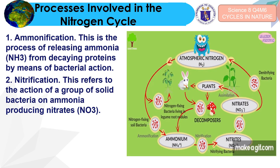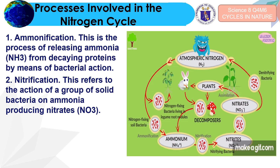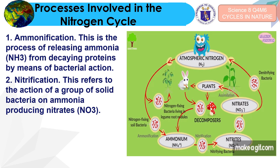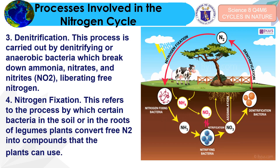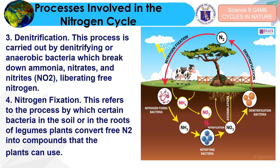The processes involved in the nitrogen cycle are: ammonification — the release of ammonia (NH₃) from decaying proteins by bacterial action; nitrification — the action of soil bacteria on ammonia to produce nitrates (NO₃); denitrification — carried out by anaerobic bacteria which break down ammonia, nitrates, and nitrites, liberating free nitrogen; and nitrogen fixation — the process by which certain bacteria in the soil or in the roots of legume plants convert free nitrogen into compounds plants can use.